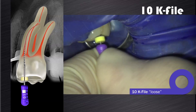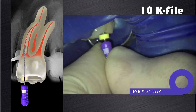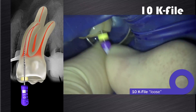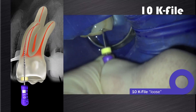In these types of canals with an irregular glide path, it is advocated to take a 08 or 10 K file to full working length, and then using small amplitudes we have to make the file loose at 1 millimeter, then up to 2 millimeters, 3 millimeters, and 4 millimeters from working length, according to the technique described by John West.